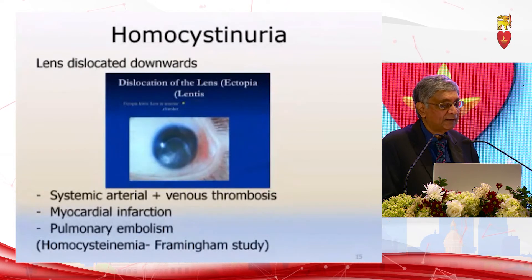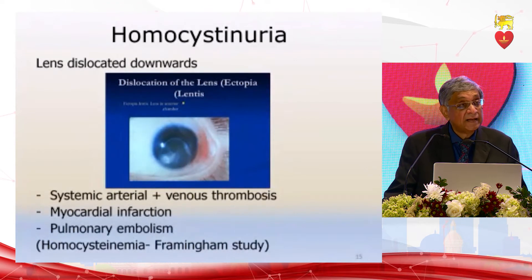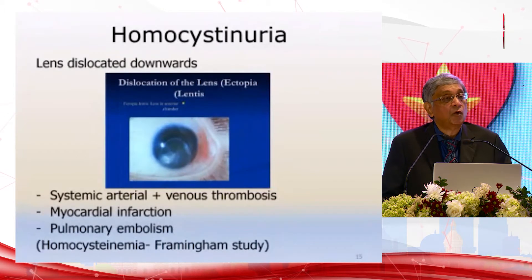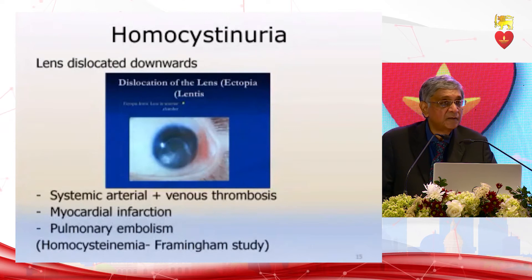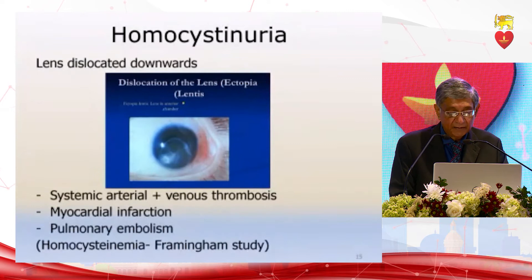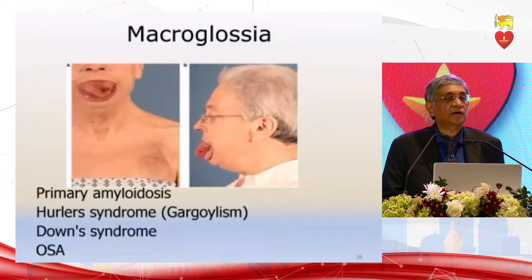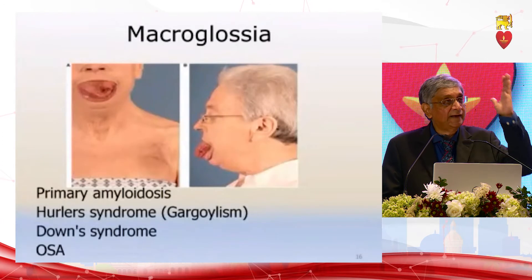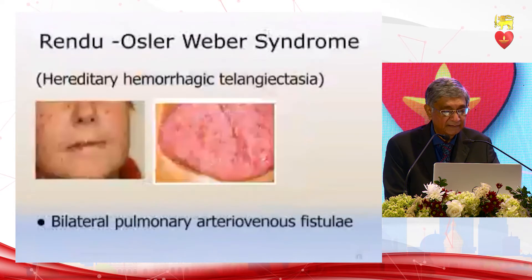Pulmonary embolism risk is also greater because of venous thrombosis. Homocystinemia, which came from the Framingham study, showed it has the same pro-thrombotic significance as homocystinuria. So looking at the lens is important. Macroglossia is again associated with obstructive sleep apnea, and in primary amyloidosis where central organs are involved. Hunter's syndrome and Down syndrome — it is an important physical sign to keep in mind.